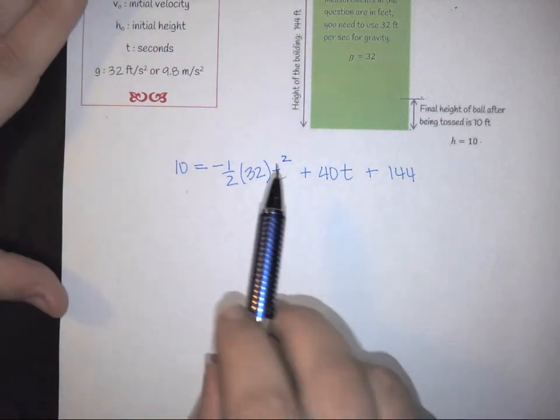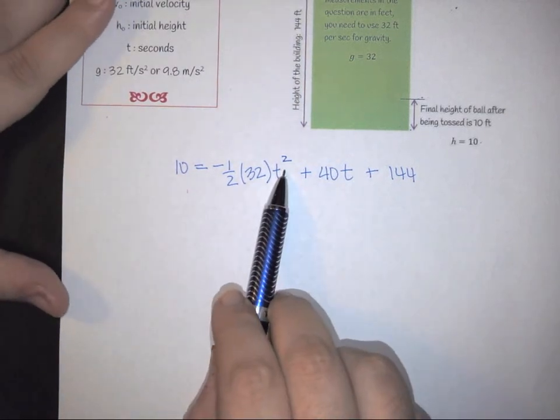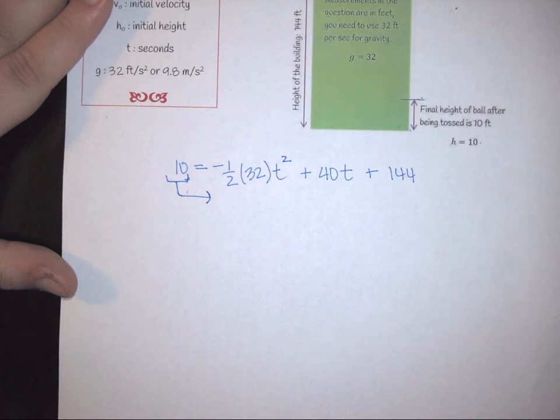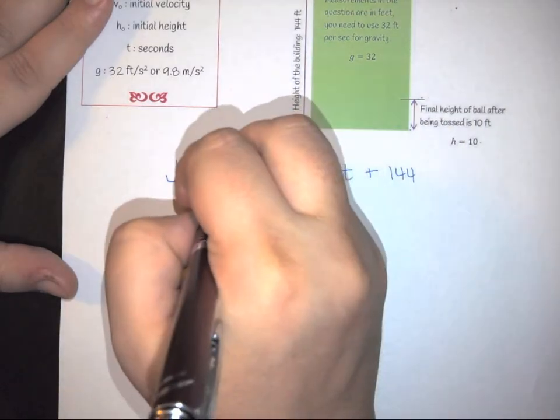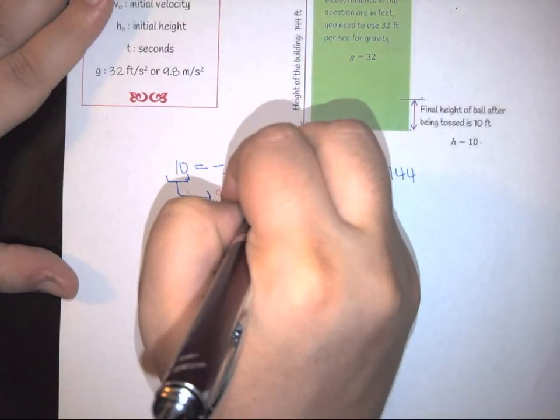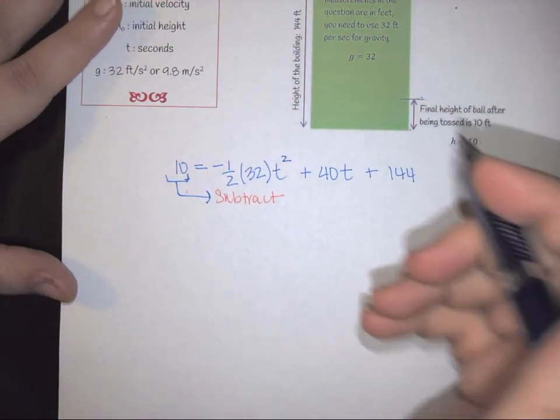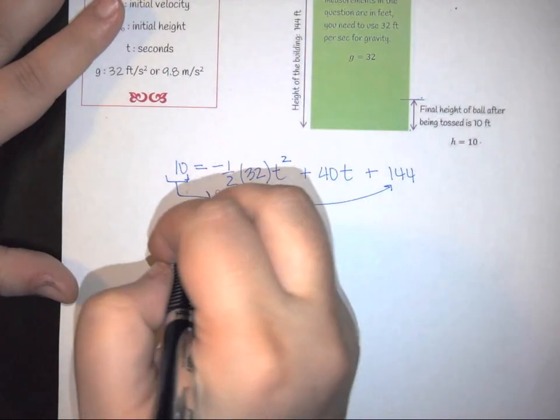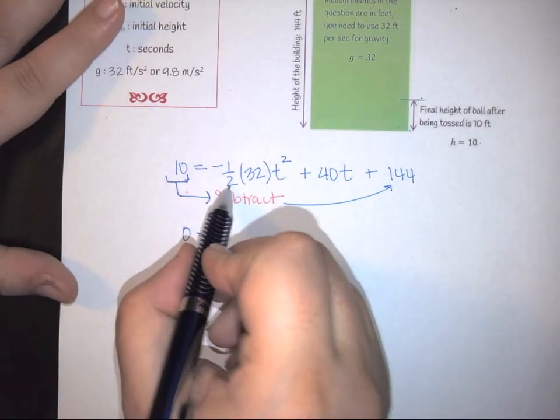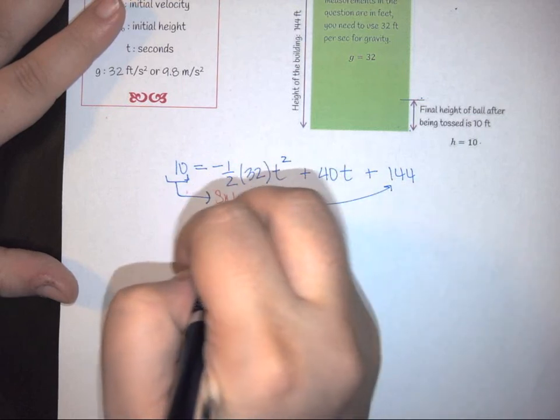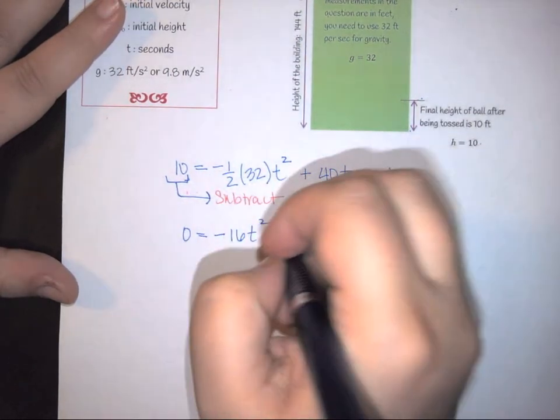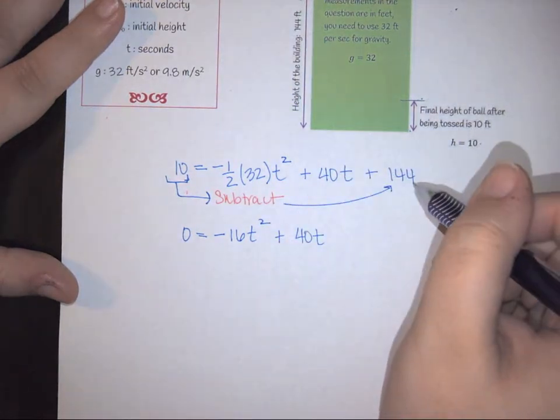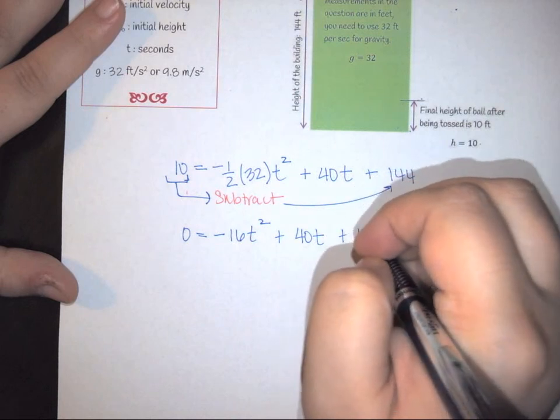From this point, now we simply have to solve that quadratic. So the first thing I would do is I would take this 10 and I would shift it over to the other side. Since it is positive, to shift it says I have to subtract. And I'm going to subtract it only from my constant. So here, I'm going to get that 0 is equal to negative 1 half times 32 is a negative 16 T squared plus 40 T. And then I have 144 minus 10, which is 134.